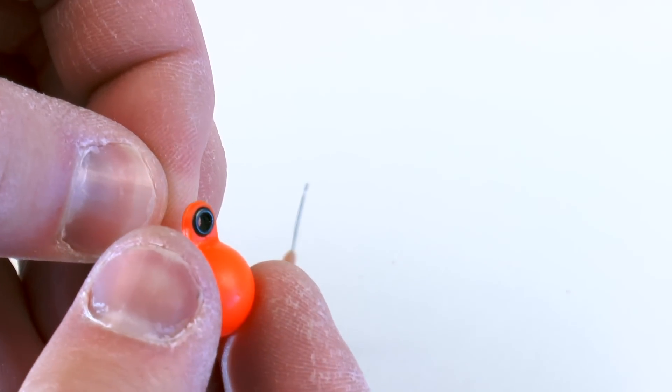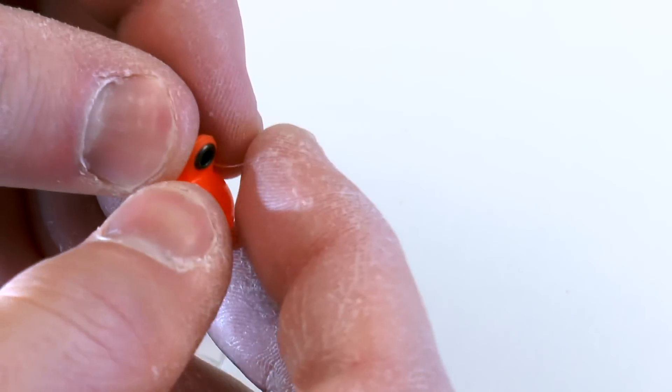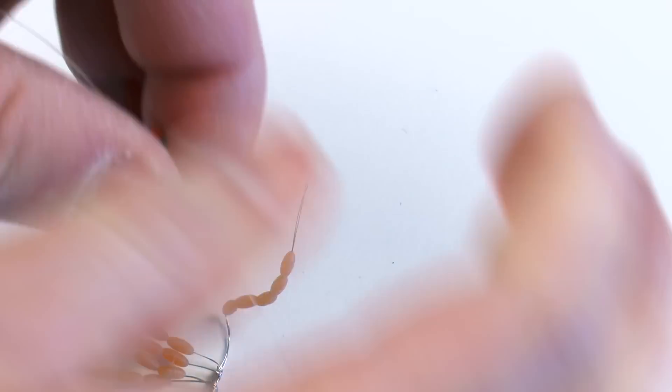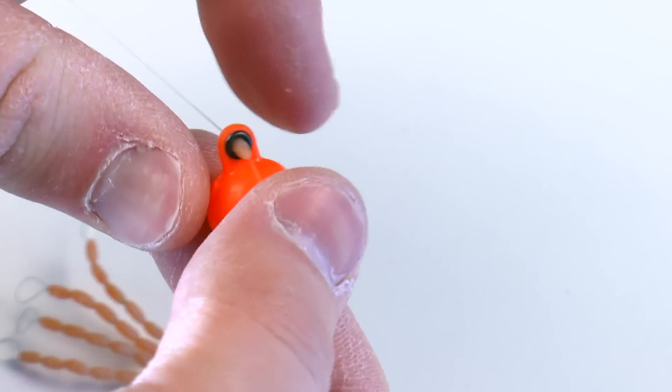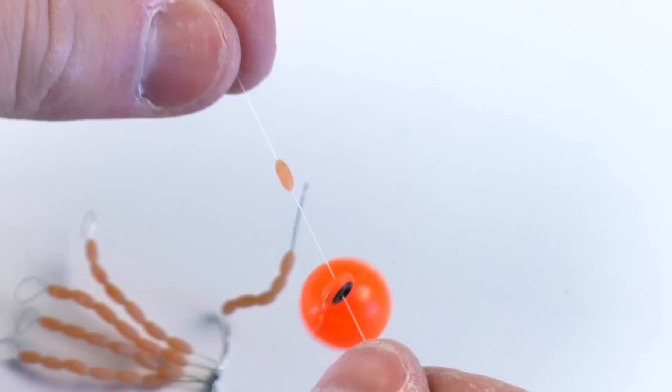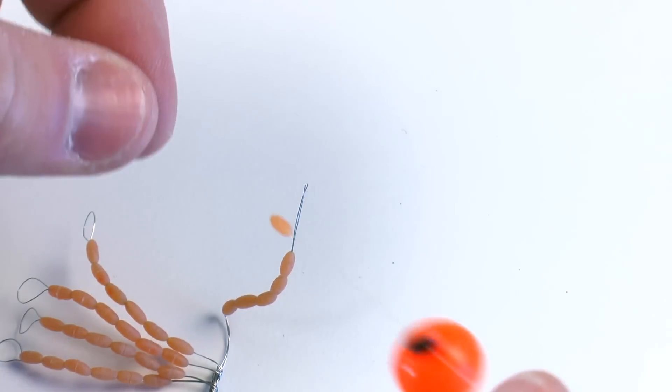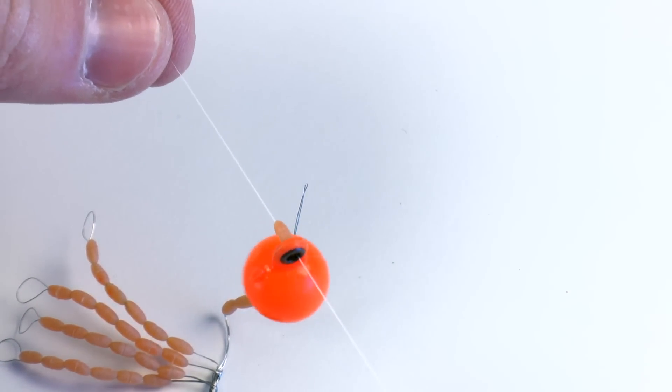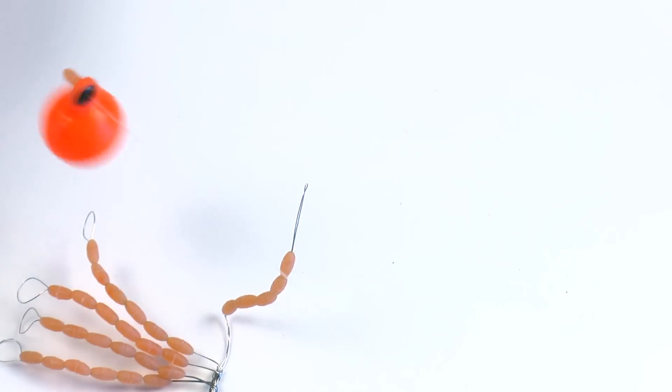Then we just take our indicator and I just take my tippet, slide the tippet through the grommet of the indicator. There we go. And there we go. We have one grommet installed or one retainer installed there.